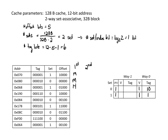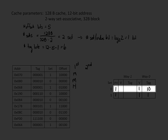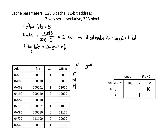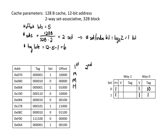The next access is going to set 0 and looking for tag 1,1,0. It's not currently in either of the two ways in set 0, so we go to replace the least recently used way. Our LRU bit indicates way 1 is least recently used, so we fill it in as valid with tag 1,1,0, and update our least recently used bit to 0, since way 1 was just accessed. This access is a miss.